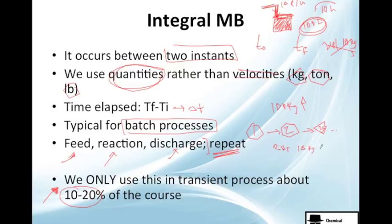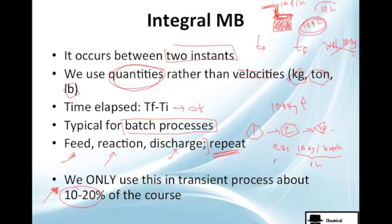For example, if you're producing 100 kilos of product and your reactor can only give you 10 kilos per batch, you'll have to run the reaction 10 times. If each reaction takes one hour, you'll need at least 10 hours total — so you repeat the process accordingly.